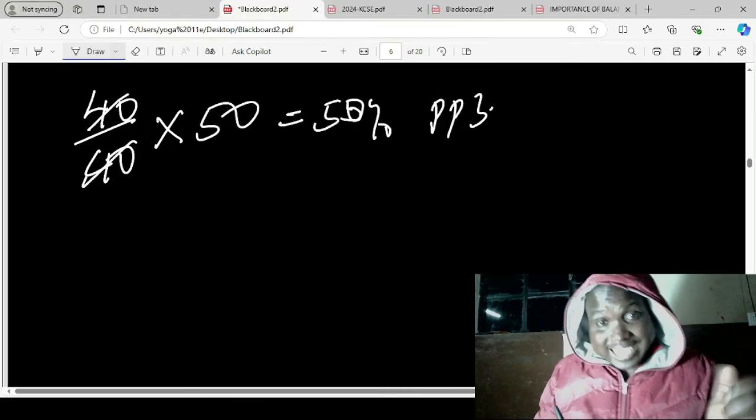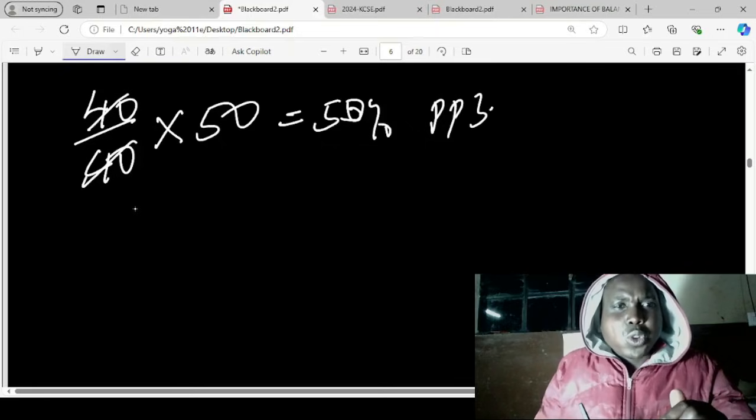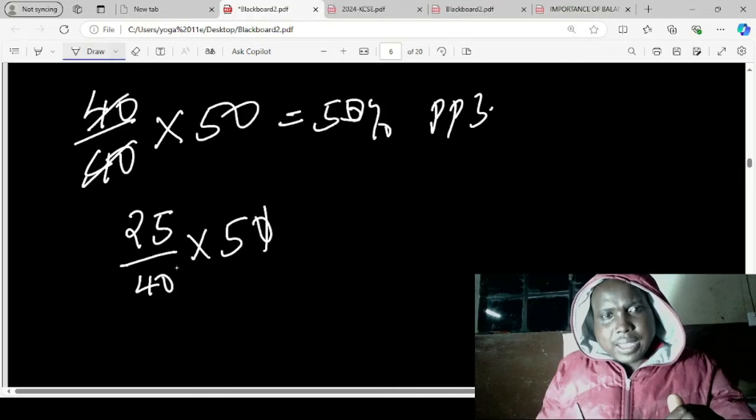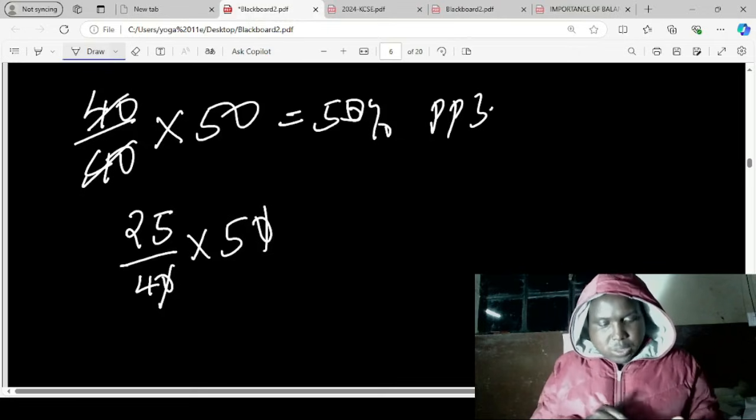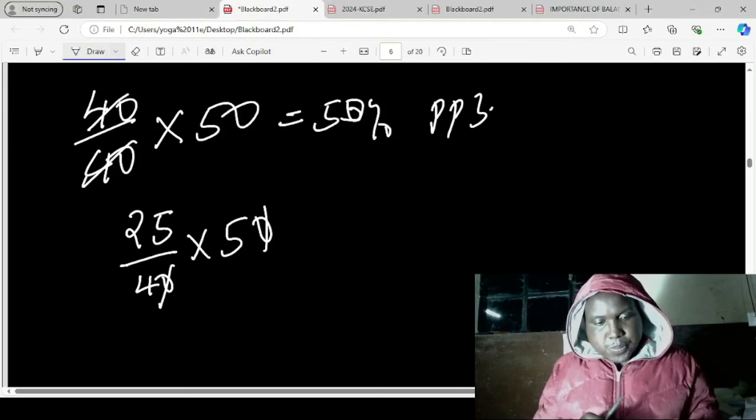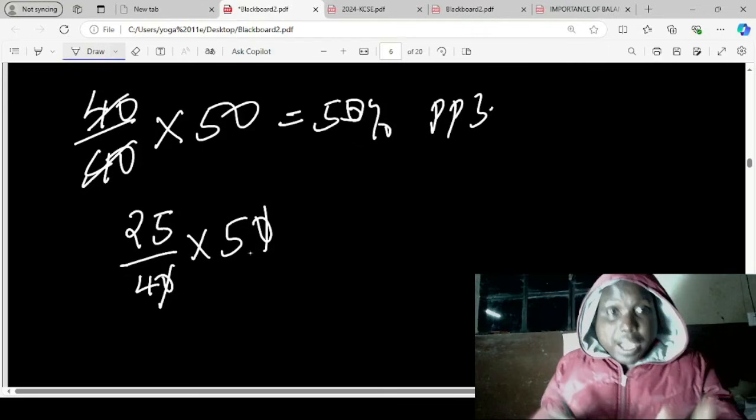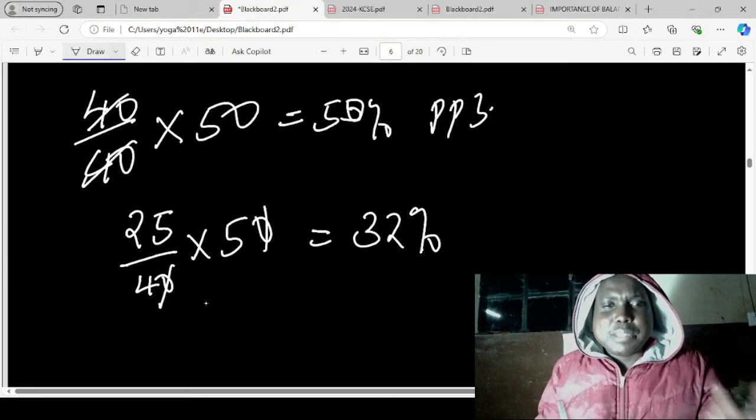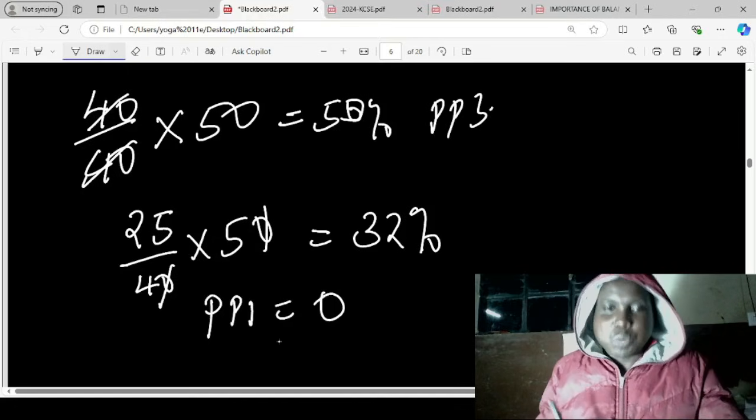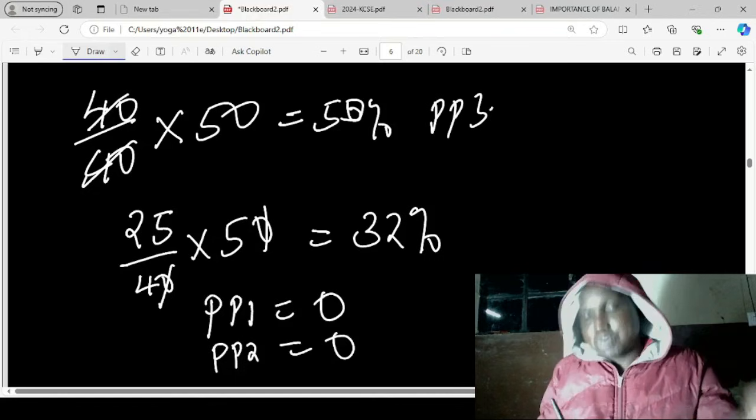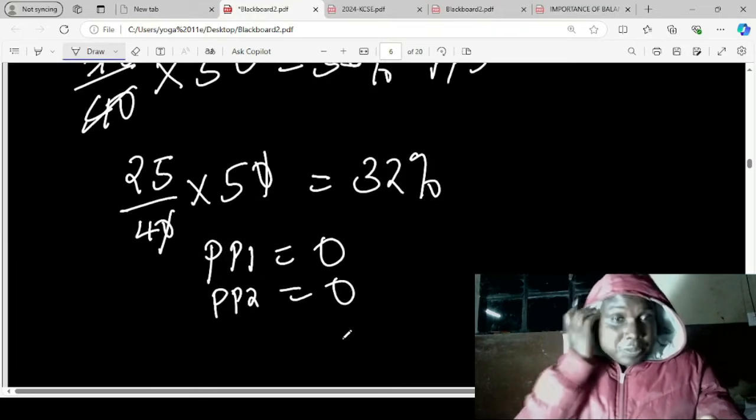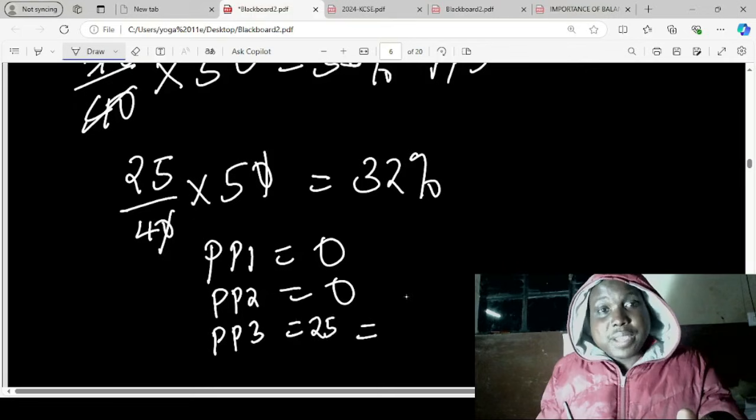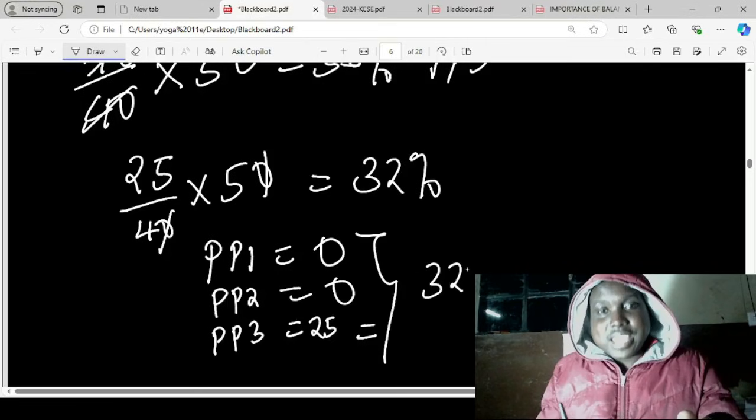If you score 25 in practical, that is 25 out of 40 times 50, which equals 1250 divided by 40. So if you get 25, you already have 31.25 percent—that is 32 percent in chemistry—assuming you get zero in Paper 1 and Paper 2, which is not really possible.